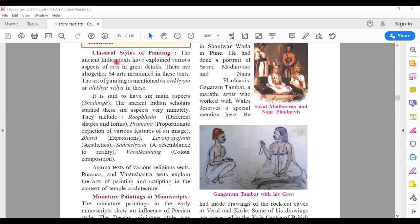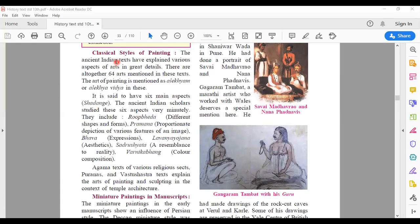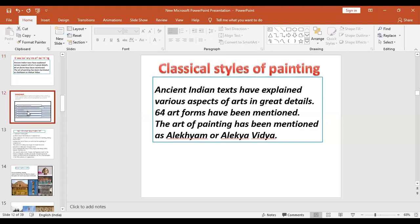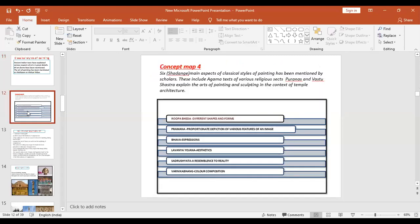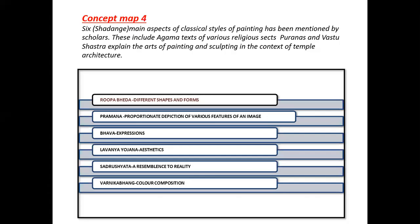I'll be sharing with you a concept map showing the six main aspects of classical styles of painting, which have been mentioned by scholars. These include the Agama texts of various religious texts, given in the Puranas and Vastu Shastra. They are also included in the art of painting and sculpting, especially in the context of temple architecture.